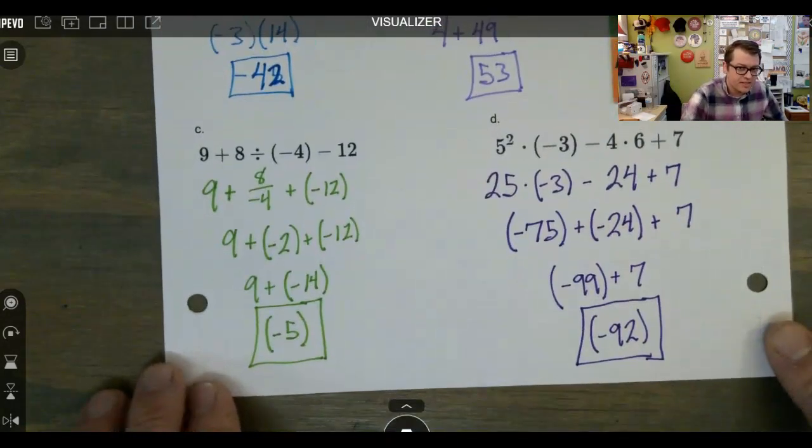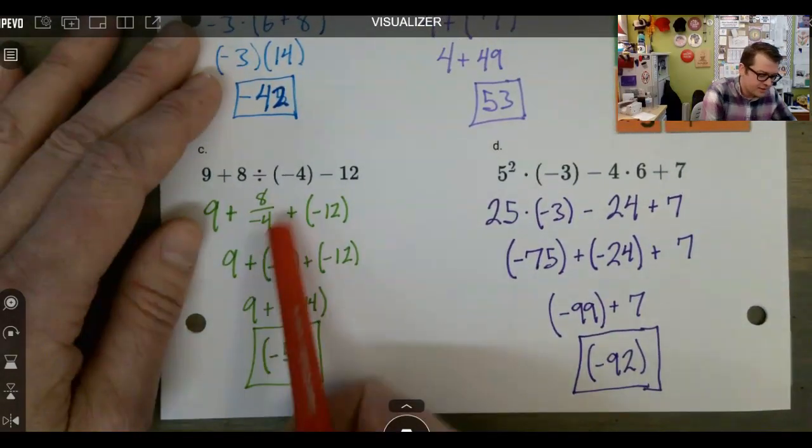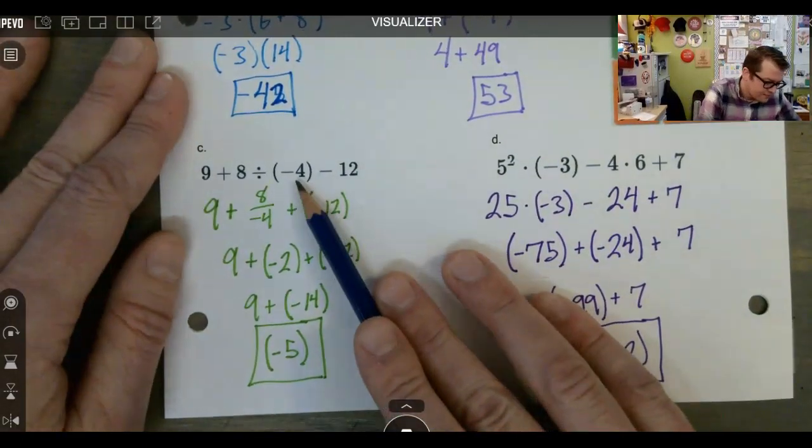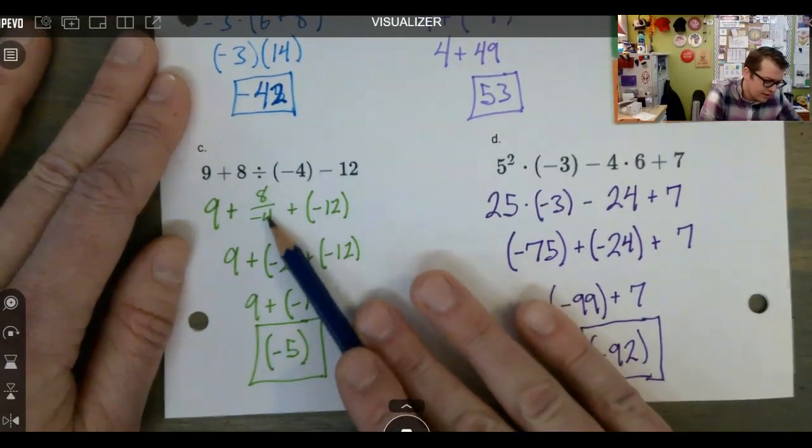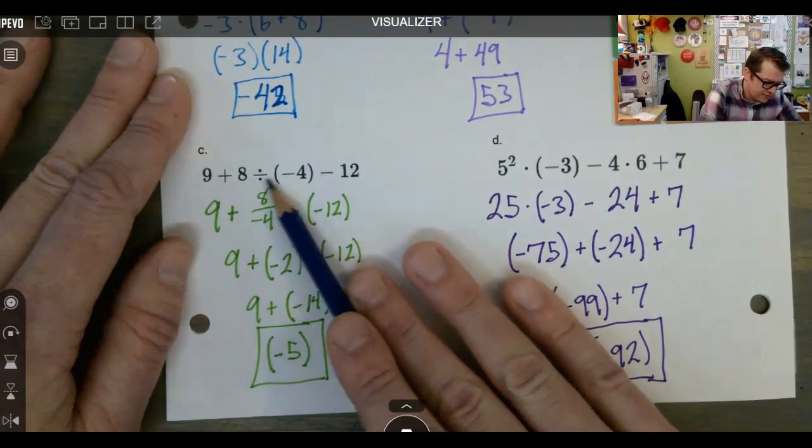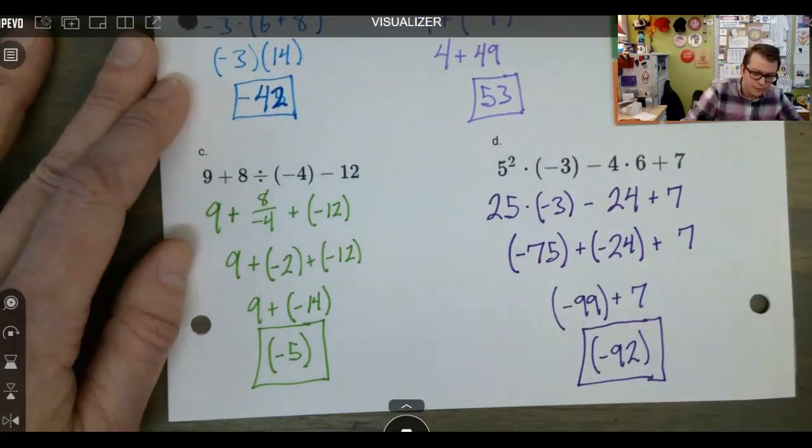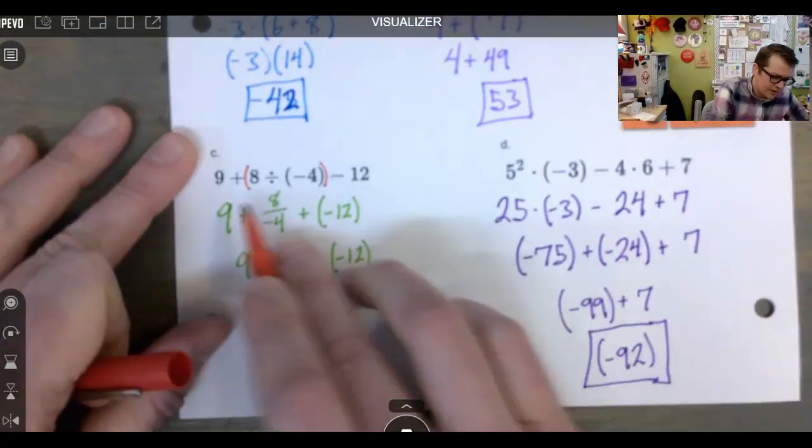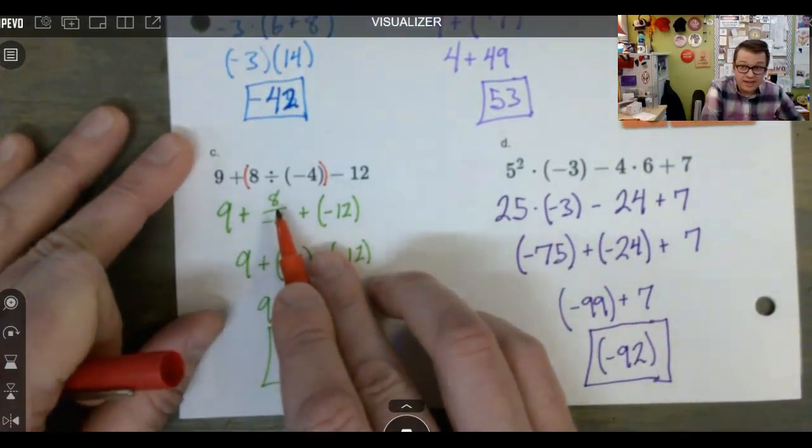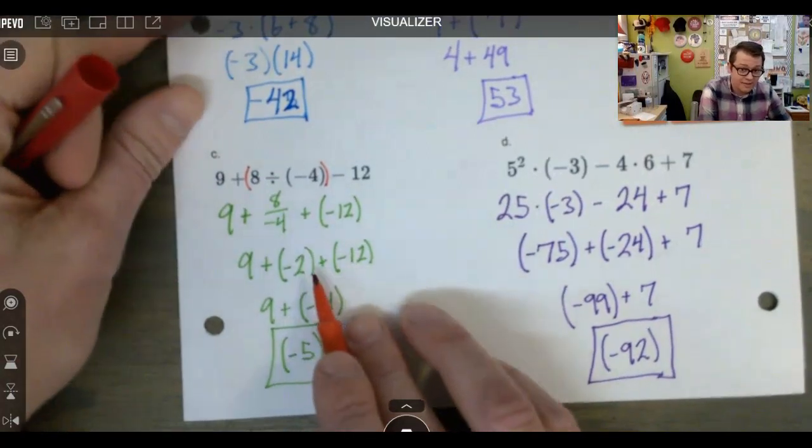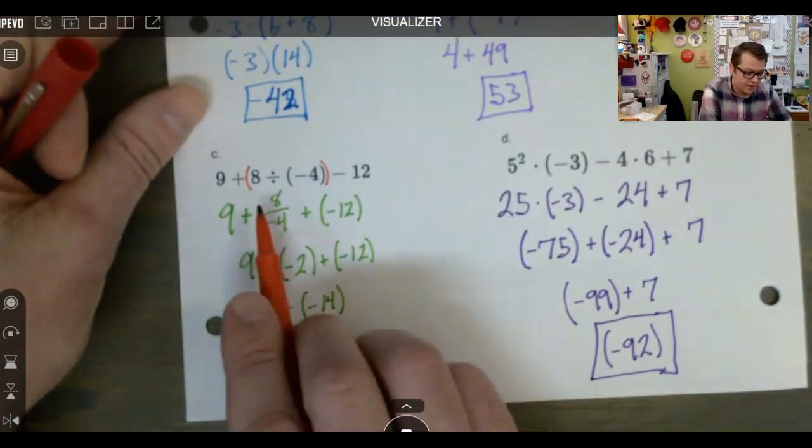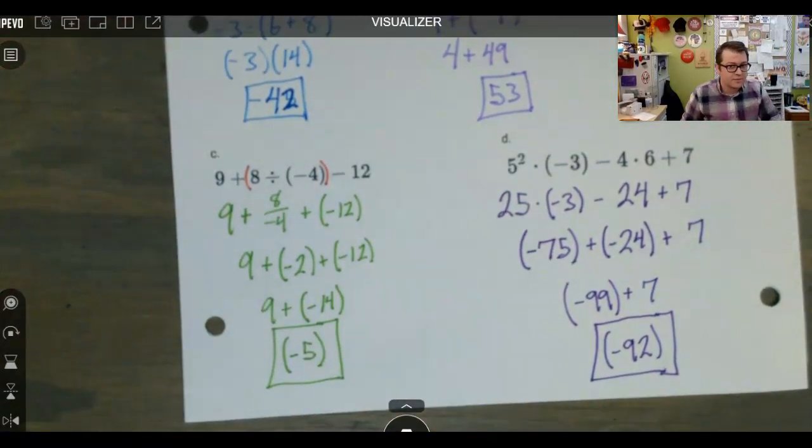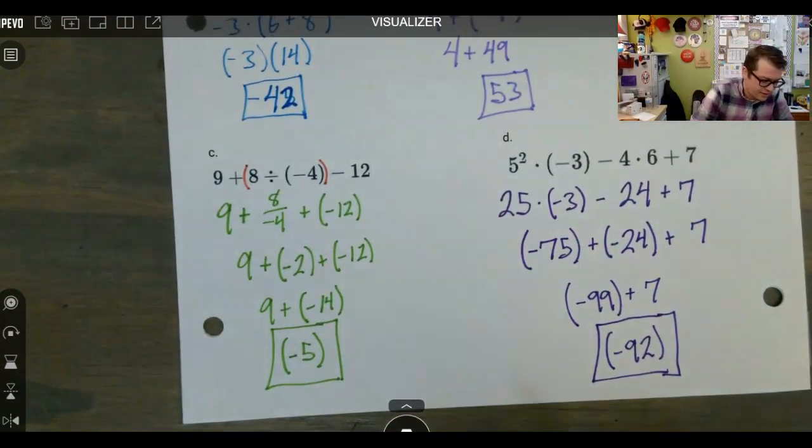In part C, this one gets real tricky. This parentheses can't be done, right? There's nothing to actually do with that. However, the division can be done. So this division actually needs to happen first. And if you want, you could go ahead and put some parentheses into the problem to remind yourself that's going to happen first. Eight divided by negative four, that's negative two, right? Positive divided by negative gives you a negative. Eight divided by four gives you two.